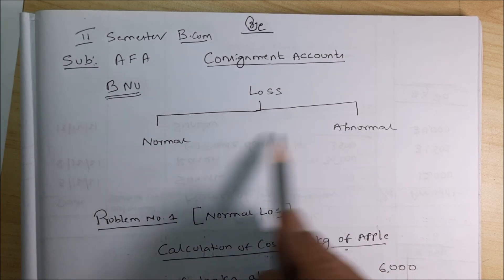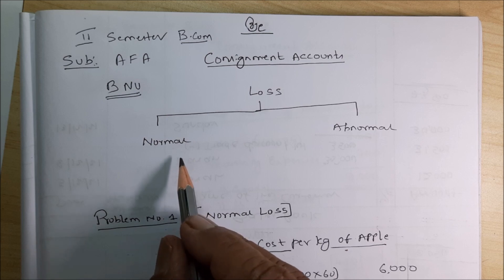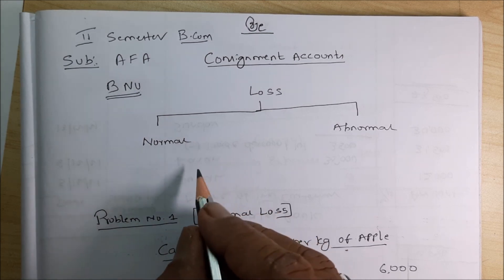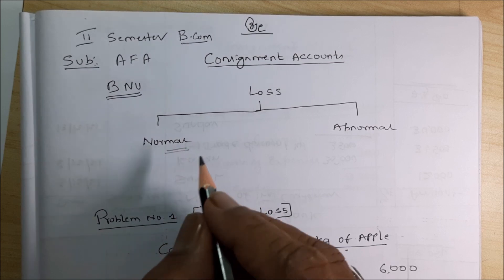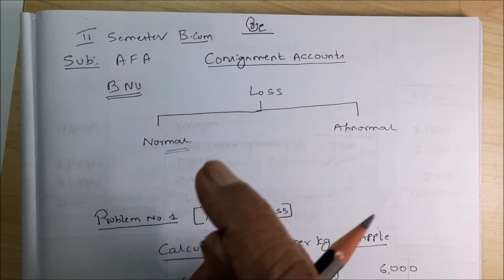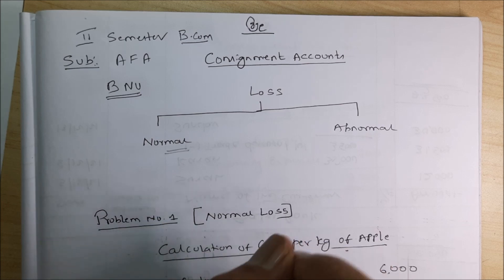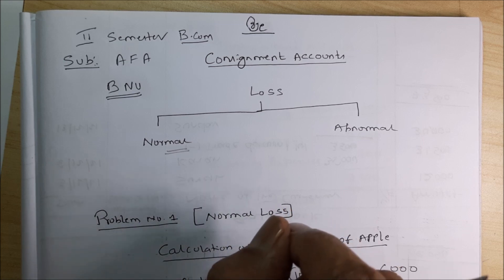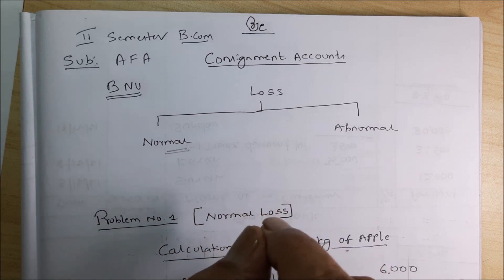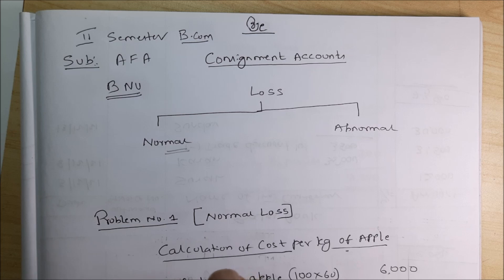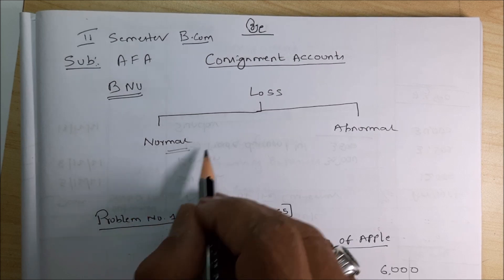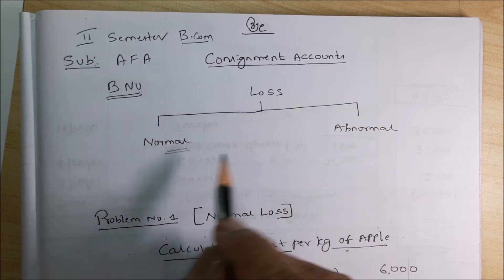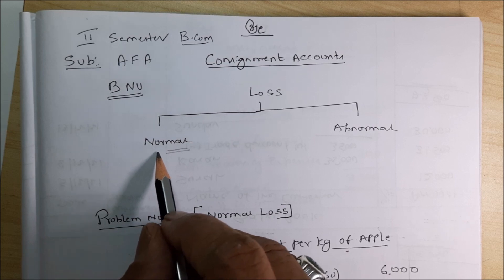What is normal? What is abnormal? Normal means it cannot be avoided — that means it is a process which cannot be avoided, and is called as normal loss. For example, when you are putting petrol into your vehicle, you think you will put one litre but you will get less than one litre because the petrol gets evaporated in the air. That difference is called normal loss — which cannot be avoided, which is called as practically normal loss.